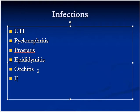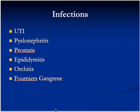Fournier's gangrene is an infection by a variety of microorganisms — aerobic and anaerobic, gram-positive and gram-negative — and basically there is a necrotizing type of infection. It is like necrotizing fasciitis when it occurs in the genitals. The patient presents with severe pain, tenderness, swelling, discoloration, necrosis, crepitus, and sometimes very foul-smelling discharge. It is polymicrobial.